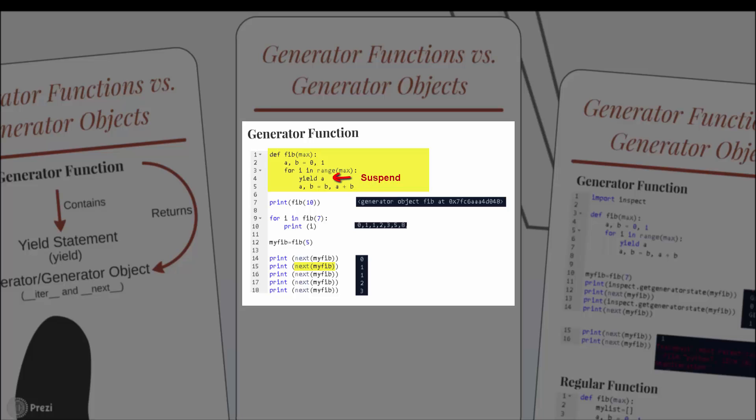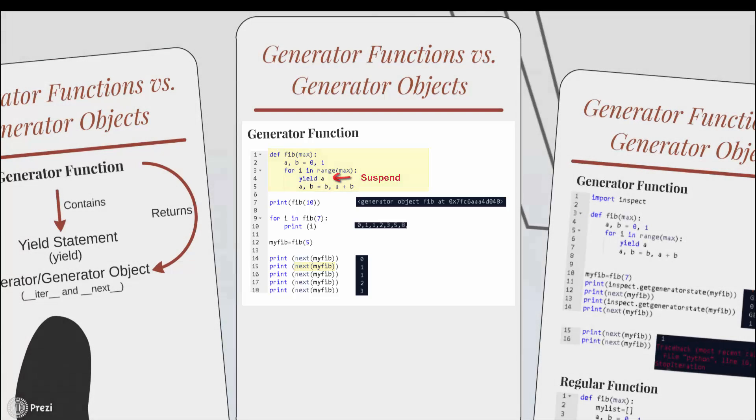When the generator is exhausted — that is, we have reached the termination condition — the generator raises a StopIteration exception. So compared to a regular function, a generator function returns a generator object which produces one element at a time, instead of returning a collection of items at once.